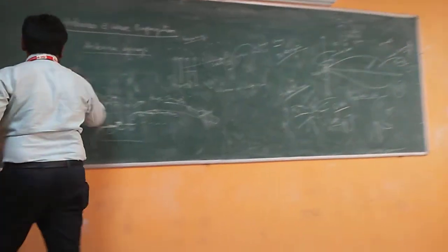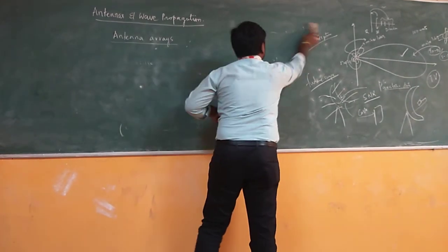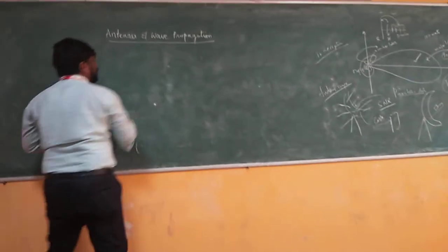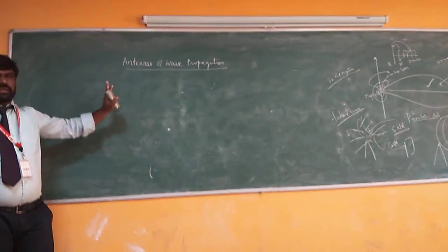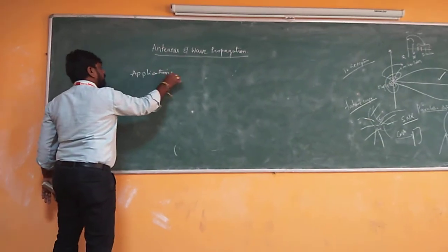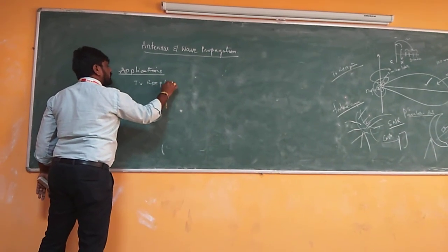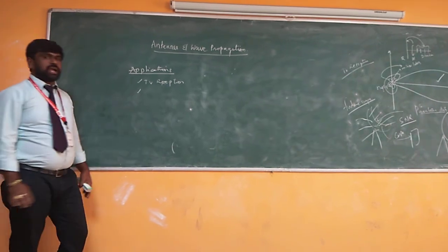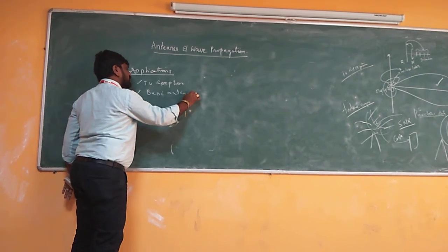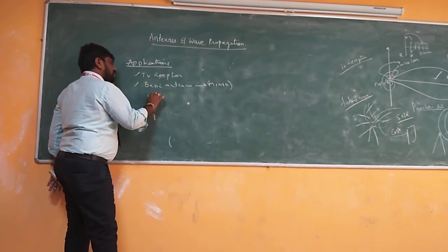Coming to applications: Yagi-Uda antennas are used in TV reception signals — a very wide application. They are also used as a basic antenna for designing new antennas, and can be used in microstrip antennas as well. Thank you very much.